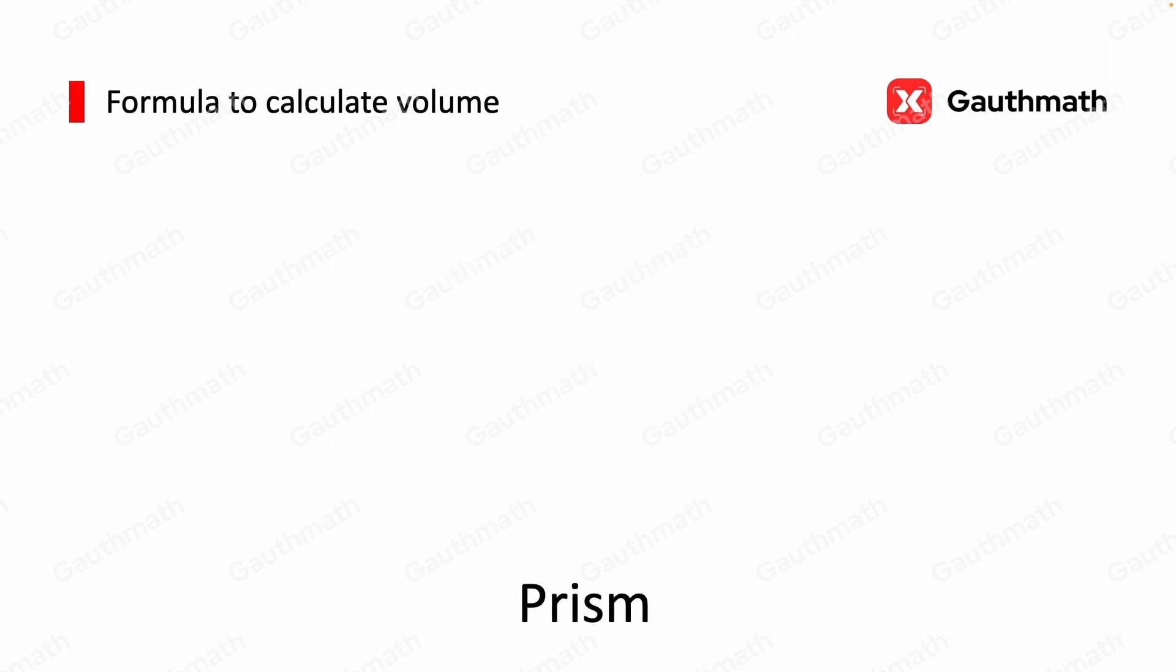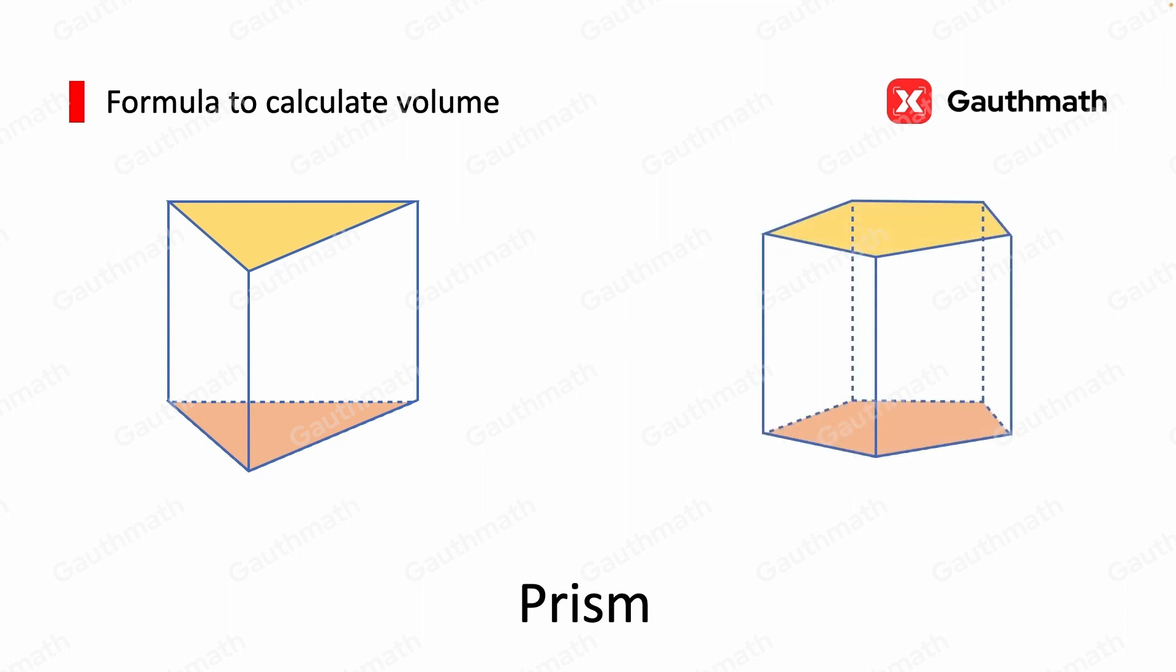We will first introduce the formula for prism. A prism is a solid shape that is bounded on all its sides by plane faces. It does not matter what the base of the prism looks like, whether it's a triangular prism on the left or the pentagonal prism on the right, the volume of a prism is always equal to base times height.